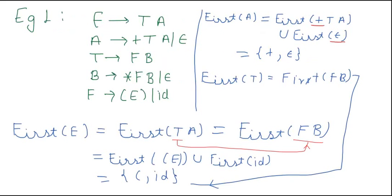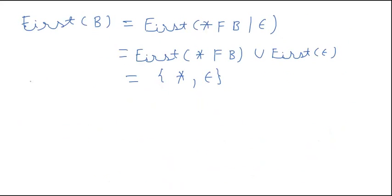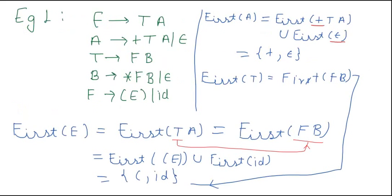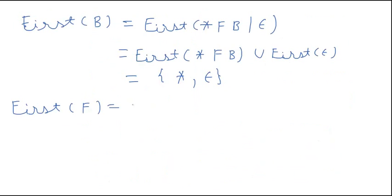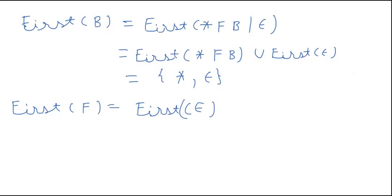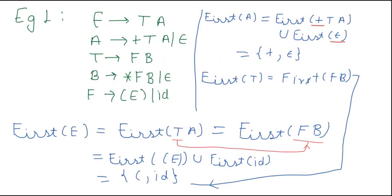Now it's remaining to calculate First(F), which we need to calculate. First(F) is equal to First((E) | id), which gives us bracket open and id.